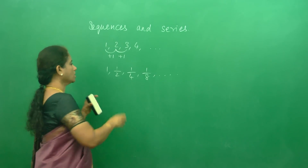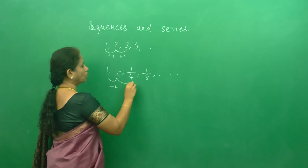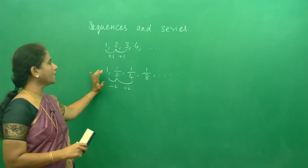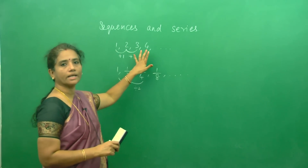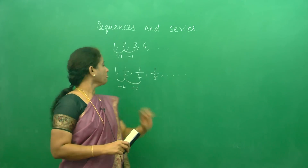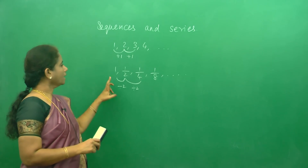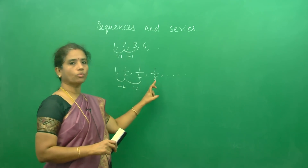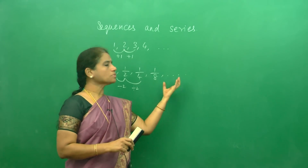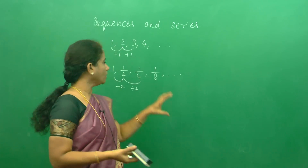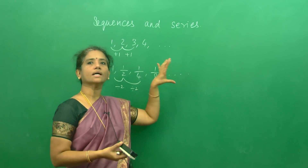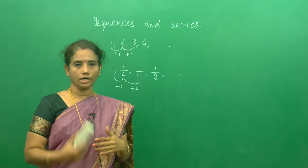Why is it a sequence? Because each number is divided by 2 to get the next number. From these two sequences you might understand: this sequence — 1, 2, 3, 4 — goes on increasing and will go up to infinity. And this sequence — 1, 1/2, 1/4, 1/8 — the terms go on decreasing. When the terms go on decreasing, by common sense we know the nth term will tend towards 0.